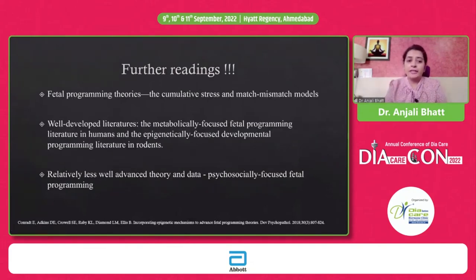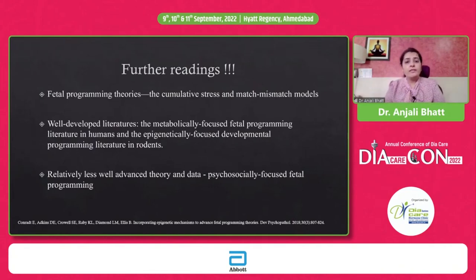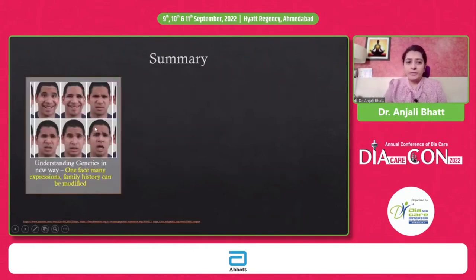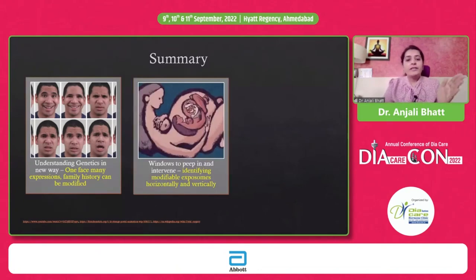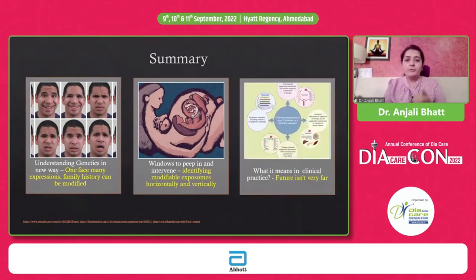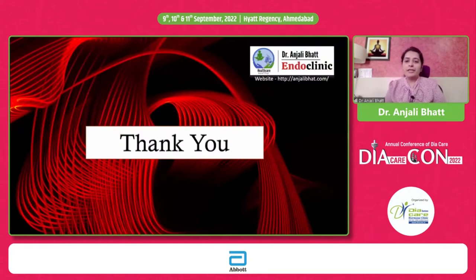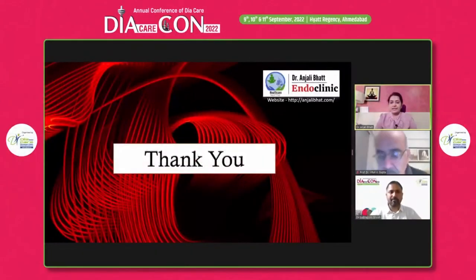We can predict response and have new therapeutic targets. For further reading, there are fetal programming theories and how stress and mismatch can cause problems. There is a very interesting but relatively less well understood theory — psychologically-focused fetal programming — where epigenetic changes can be modified by changing the psychological profile of the mother or father. In summary: genetics understanding has changed; we understand genes and their modification through epigenetic factors; there are multiple windows to identify modifiable exposomes; we can change not only the individual's life but generations to come; and it will not be very far when we use epigenetic and genetic markers in our clinic to predict the right therapy for the right patient.